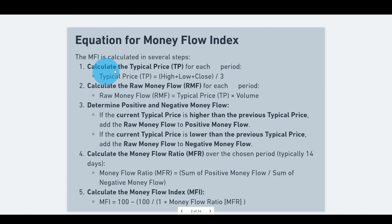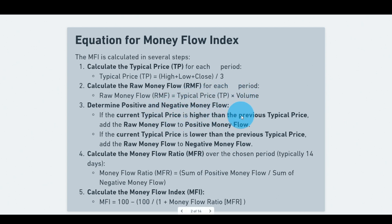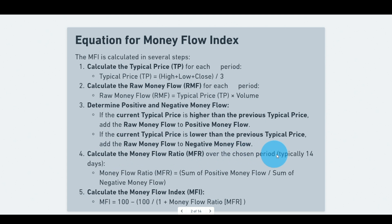Here is how we calculate the Money Flow Index. First we calculate the typical price: (high + low + close) / 3. In most trading platforms this is already available as 'typical price.' Once you have the typical price, multiply it by the volume of that day. Then we separate buying and selling pressure: if the current typical price is higher than the previous typical price, that is positive money flow; if it is lower, that is negative money flow. Once labeled, we sum them over the look-back period — for example, 14 periods.